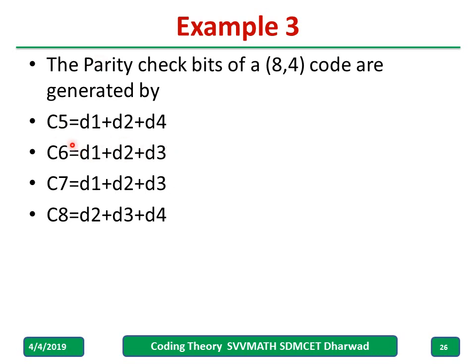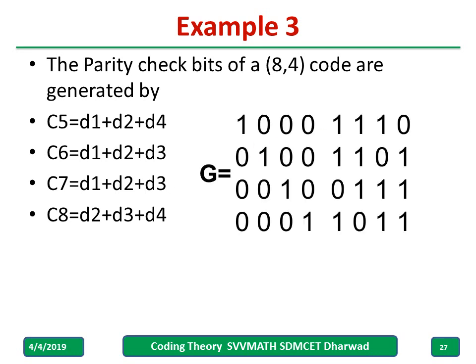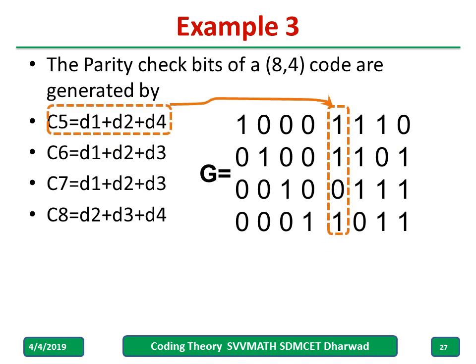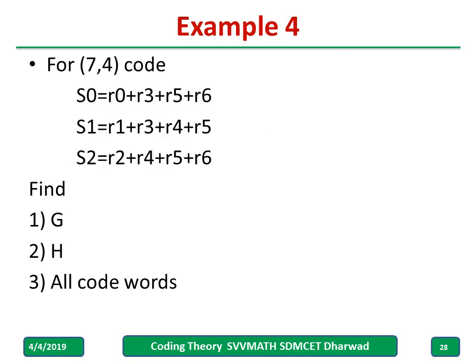Take another example: sometimes only the parity equations are given — for example, c5 = d1 + d2 + d4, and so on for an (8,4) code. What to do? From the equations you can directly write the parity matrix P. Then write G = [I | P]. Once you have G, c = d·G gives all the code words. Writing c from the equations: d1 + d2 + d4, where d3 is not included — that is all you need.